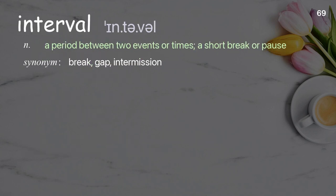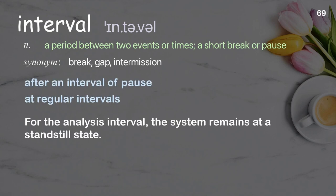Interval: A period between two events or times; a short break or pause. Examples: After an interval of pause, At regular intervals. For the analysis interval, the system remains at a standstill state.